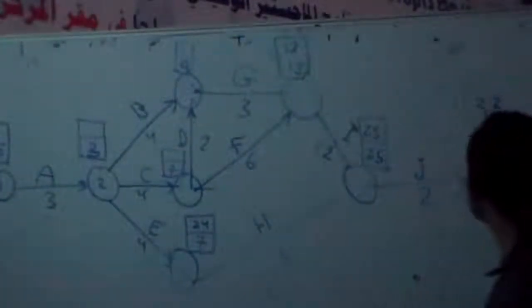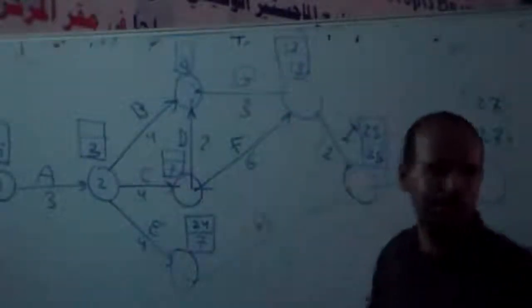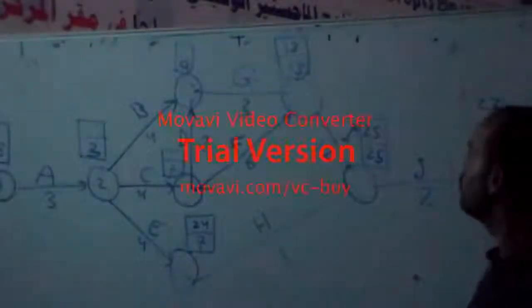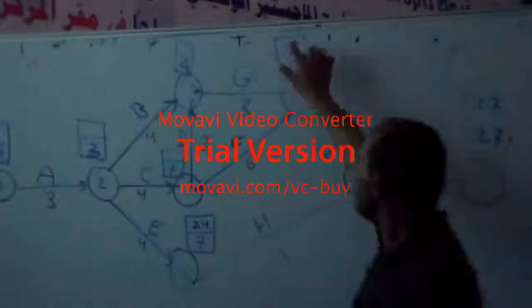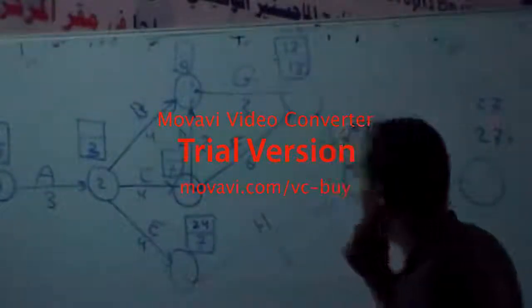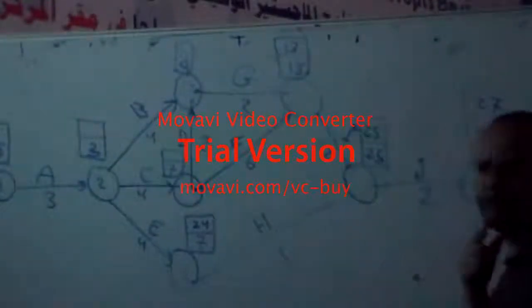Once this one is 27, 27, 25, 25, 30 — this is the critical. So if we are taking it now, 13 minus 6 is 7.